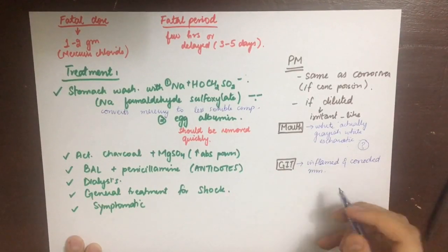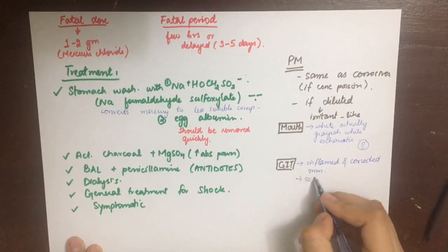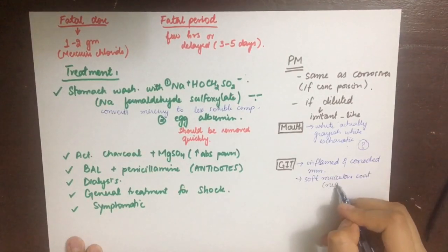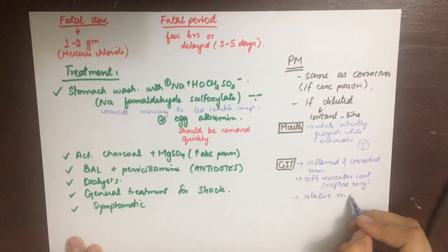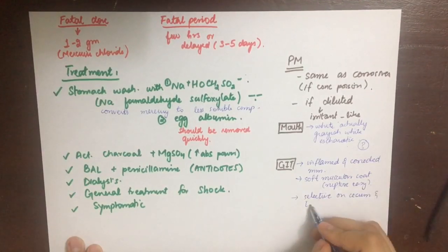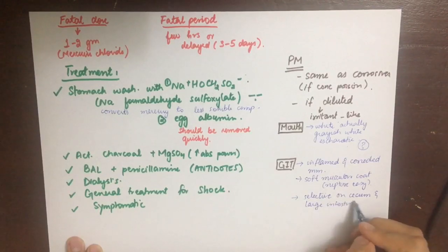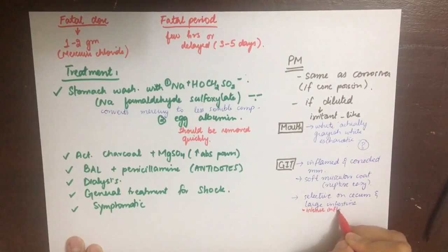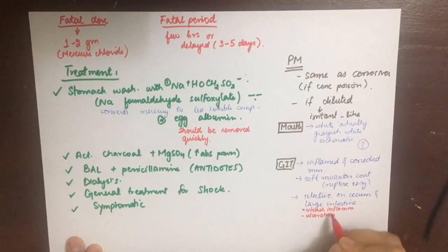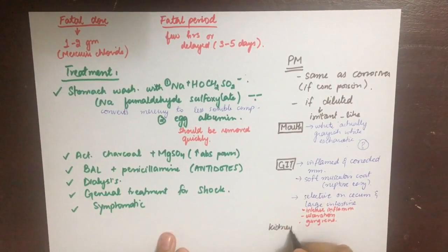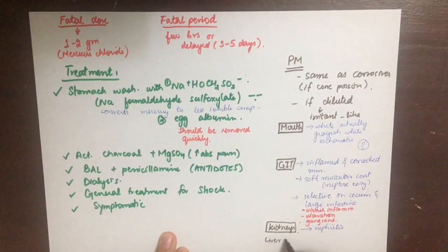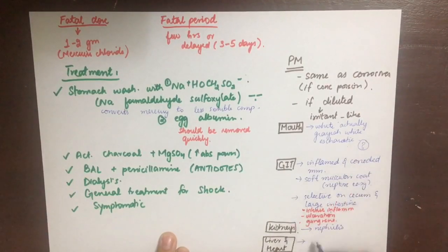The muscular coat of the stomach and the whole GIT will be soft and easily ruptured. Mercury has a selective action on the large intestine because it is re-excreted into it, causing intense inflammation, ulceration, and gangrene. The kidneys will show signs of nephritis, and the liver and heart will show fatty degeneration. The heart will also show sub-endocardial hemorrhage due to liver compromise.